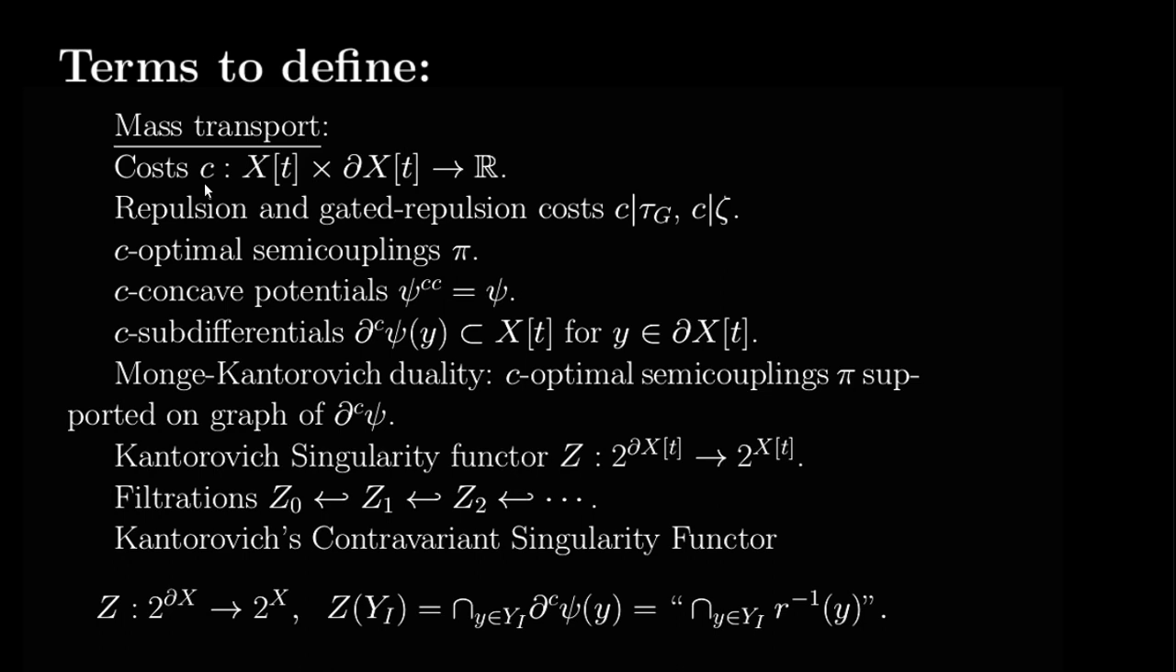For us, this first starts with source and target with the excision models. Then the excision model has interesting homology at infinity. Steinberg modules, we get Steinberg symbols and filling. Then we start translating them and build up chain sums, and we ask for well-separated gates structure. And that's just for mass transport. We have to have costs. I need to introduce repulsion, gated repulsion costs, optimal semicoupling, concave potentials, C-subdifferentials. It's all beautiful theory. But everything is summarized in Kantorovich's contravariant singularity functor.